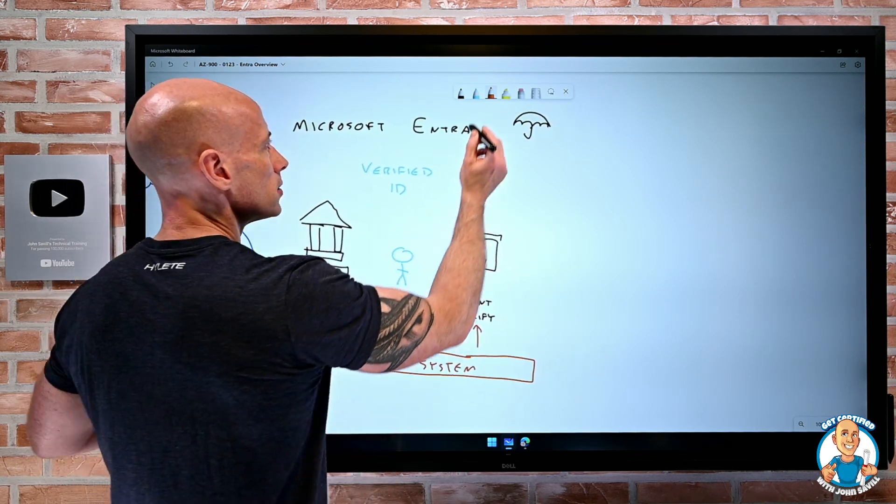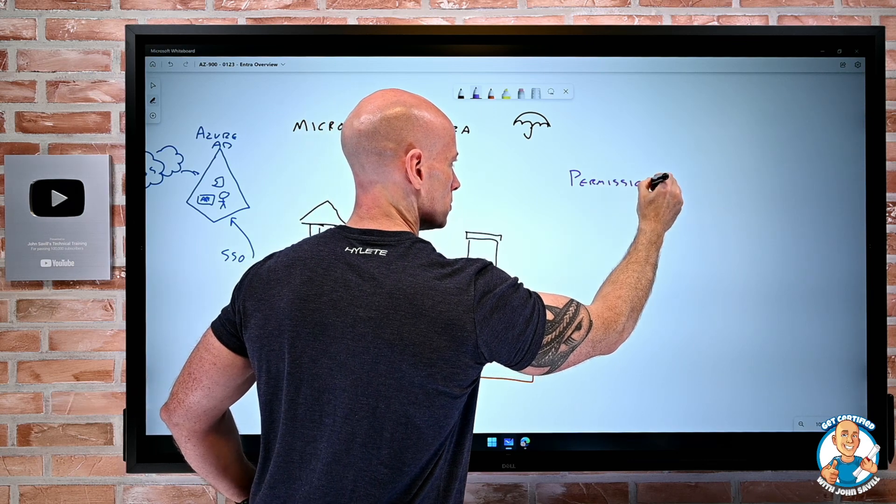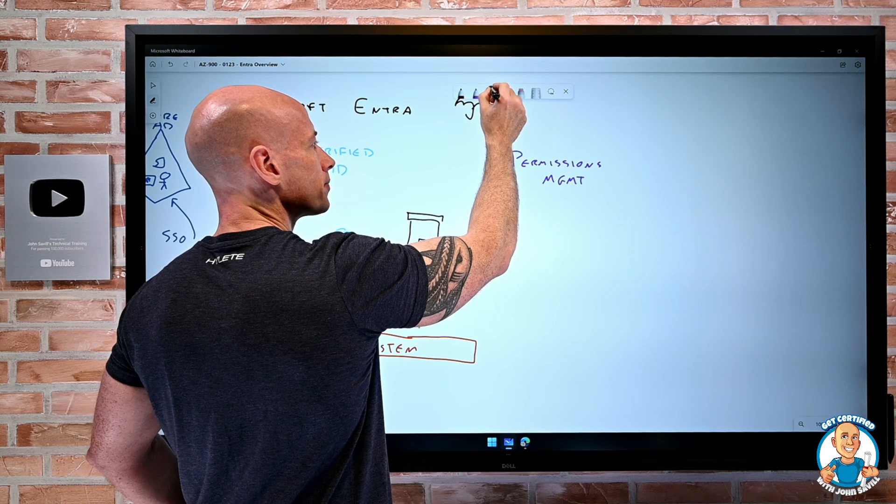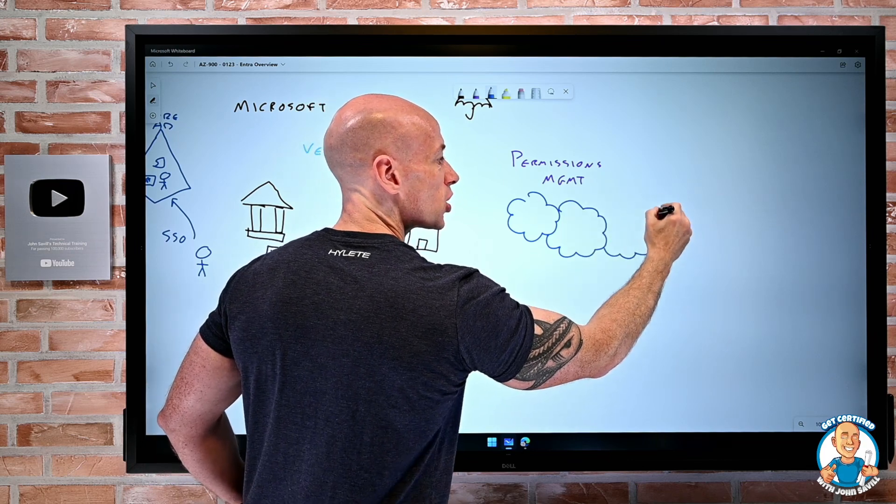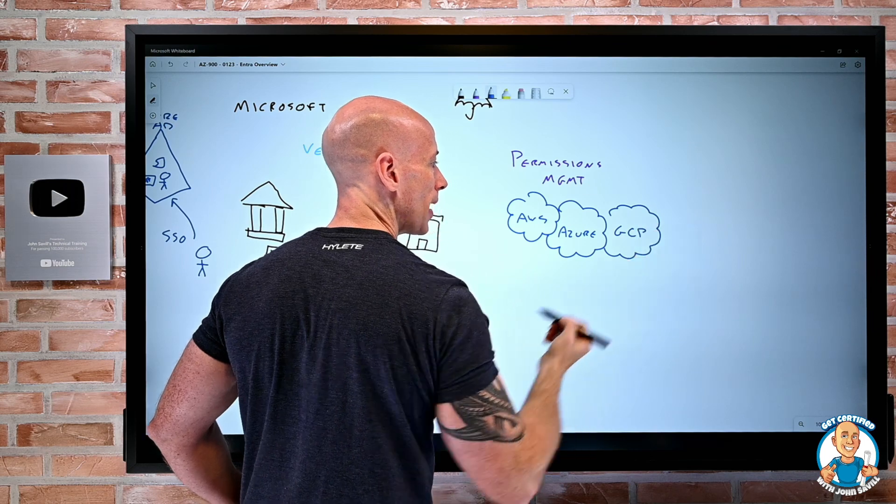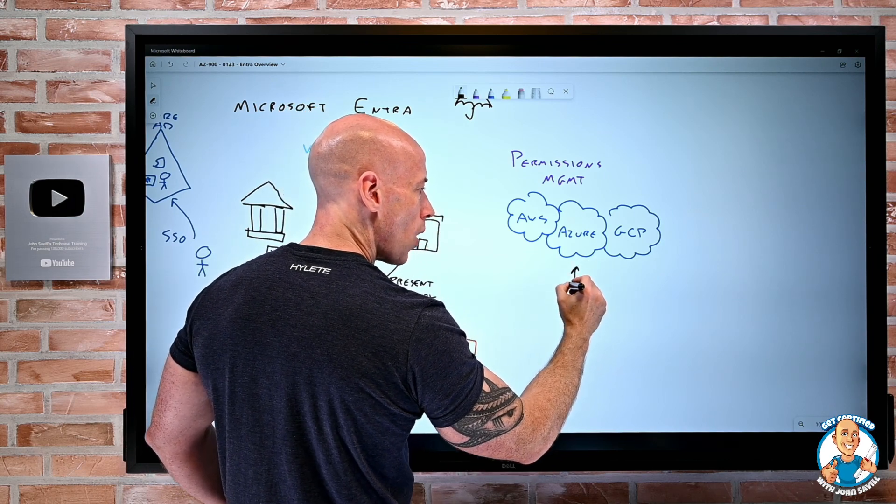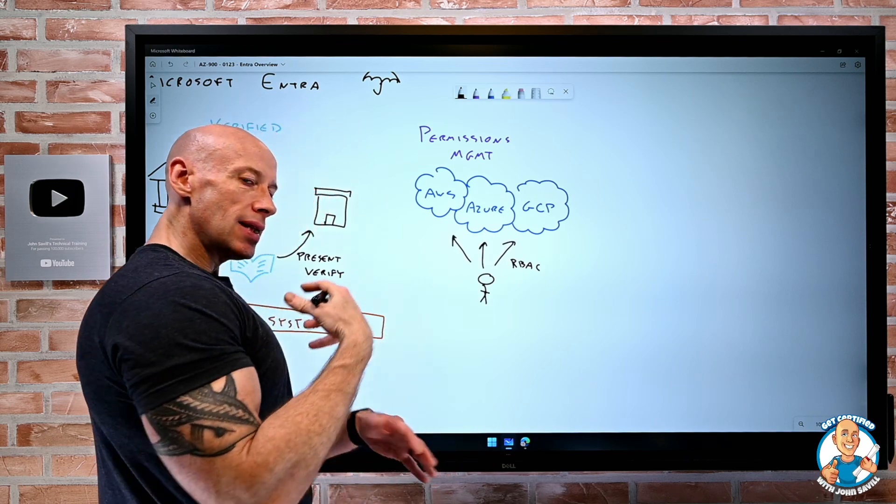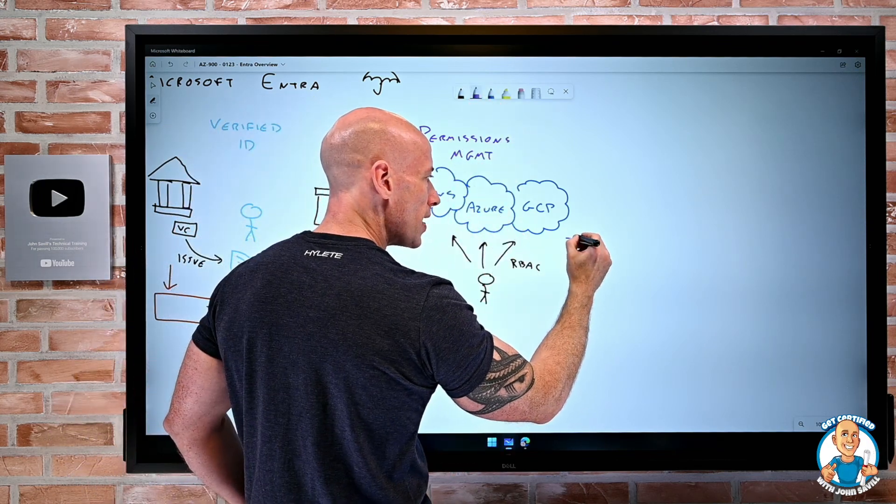Another component of Microsoft Entra is permissions management. And this was the CloudNox acquisition. This is based around the idea that there are different clouds. Obviously, we think about Azure, but there are really three big clouds today: Azure, AWS, and Google Cloud Platform. And as a user, I have permissions, maybe on one or more of these clouds. There's some sort of role-based access control of what I can do. And what tends to happen over time is they get more and more permissions. We have more than we need.